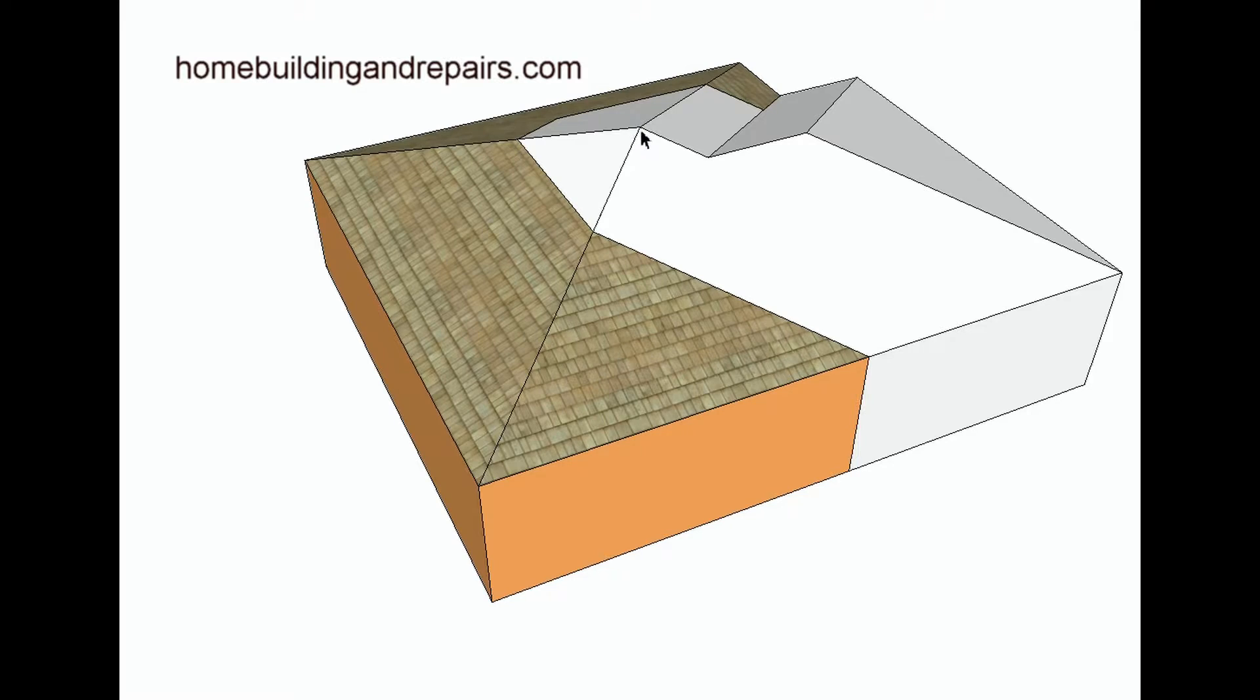So you would have a hip coming up here, a hip coming down to the valley, and then a ridge coming across here to your two hips.